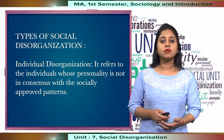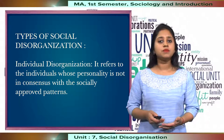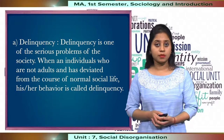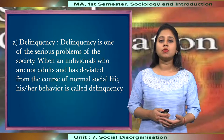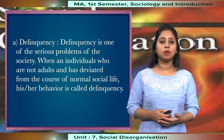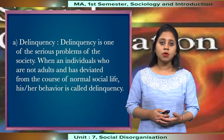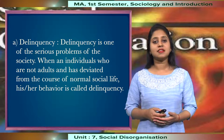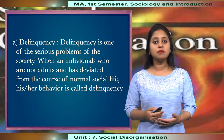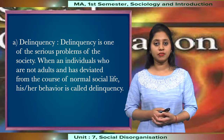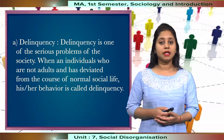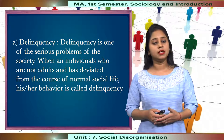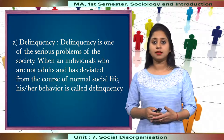There are various forms of individual disorganisation. First, delinquency, which is one of the serious problems of a society. When an individual who is not yet an adult has deviated from the course of normal social life, their behaviour is known as delinquency and he or she is known as a delinquent.